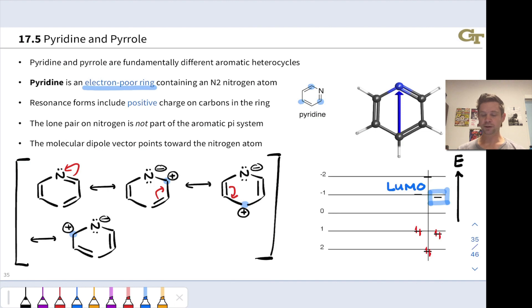And in particular, we can notice that the LUMO of pyridine is relatively low in energy. The LUMO of pyridine is lower in energy than the LUMO of benzene. We can trace this to the electron-withdrawing effect of the N2 nitrogen atom.